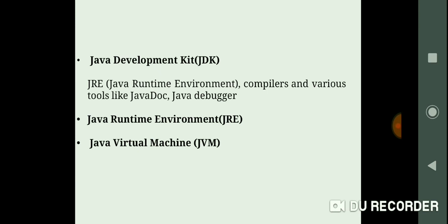Last point is JVM. JVM executes the bytecode produced by compiler. Each operating system has different JVM. However, the output they produce after execution of bytecode, it's same across all the operating systems. This is important. JVM executes the bytecode produced by compiler. Each operating system will have different JVM. However, the output they produce after execution of bytecode is same across all the operating systems. That is why Java is called as platform-independent language.